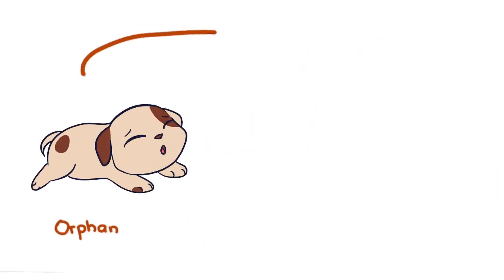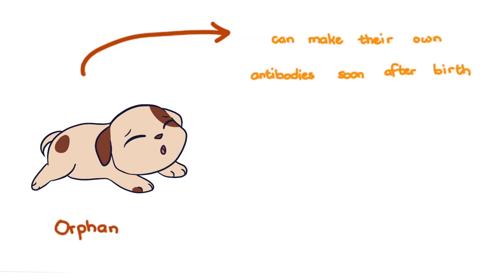If for example, a pup was orphaned and never got to suckle colostrum, they can make their own antibodies soon after birth, and can be vaccinated as early as 2 weeks old.